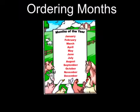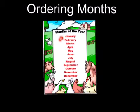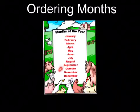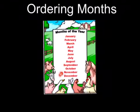In the last episode, we looked at there being 12 months of the year. Those months were January, February, March, April, May, June, July, August, September, October, November, and December.